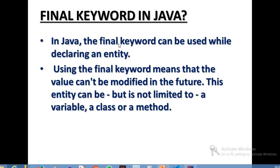We can use the final keyword to declare an entity. It may be a class, it may be a method, it may be a variable. If we declare a final keyword, we declare an entity. Using the final keyword means that the value can't be modified in the future.